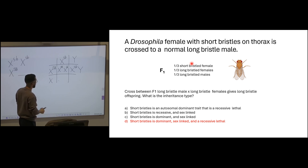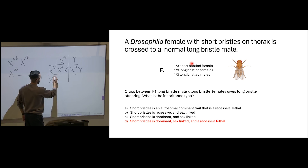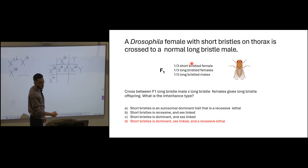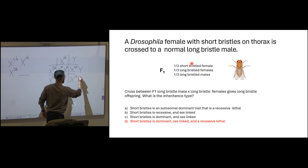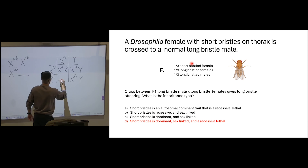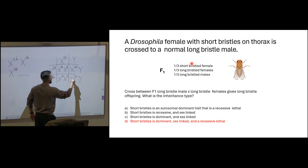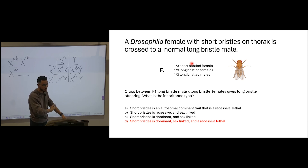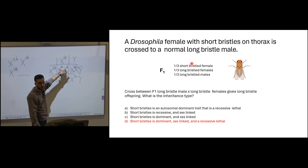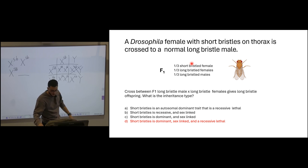This one here has to be small s, small b to have a long bristle male, and then a long bristle female. And this one? Dead. So this is like the long form of the answer — you can also just imagine that if the female has the two alleles she will die, so obviously this one has to be heterozygous.